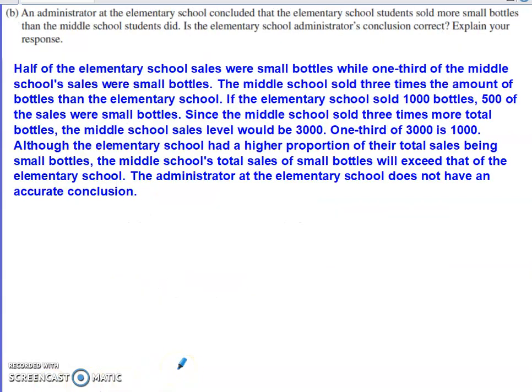The administrator at the elementary school concludes that the elementary school students sold more small bottles than the middle school students did. Part B asks: is the elementary school administrator's conclusion correct? We know half of the elementary school sales were for small bottles, while one-third of the middle school sales were small bottles, so clearly the bigger proportion was attained by the elementary school. But this question isn't about the proportion being bigger.